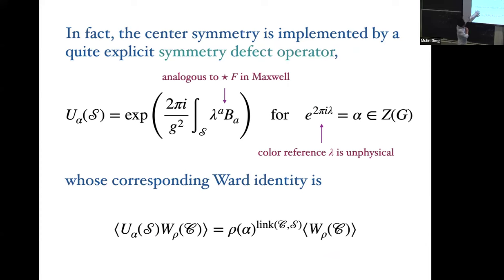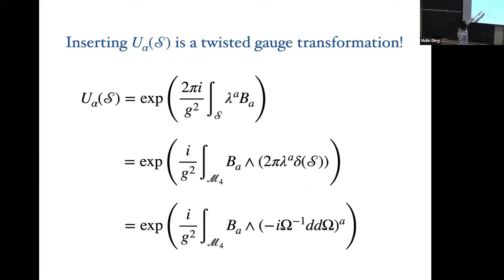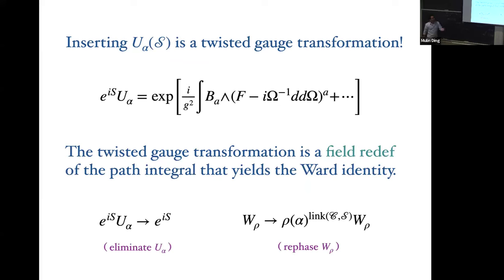Do a twisted transformation and you induce a field-strength curvature — a delta-function-supported correction to the curvature which looks precisely like a worldsheet table object. This is the operator: in Yang-Mills it's this object where B is a real field. Just like before, we can write U and recast it as a delta function integrated over all space, writing this delta function as a gauge transformation — and the action of the symmetry operator is nothing more than instructions to do one of these winding gauge transformations.